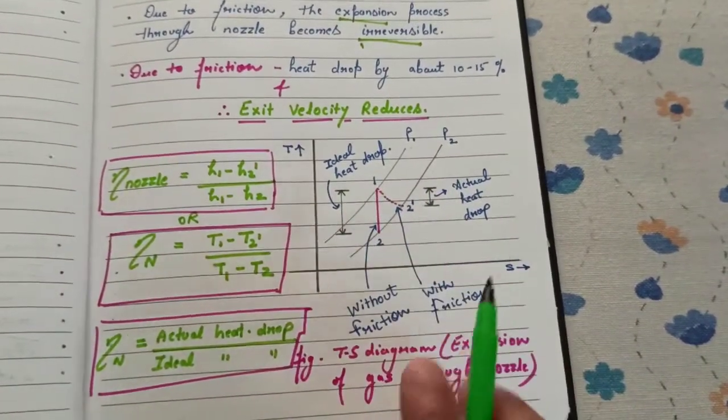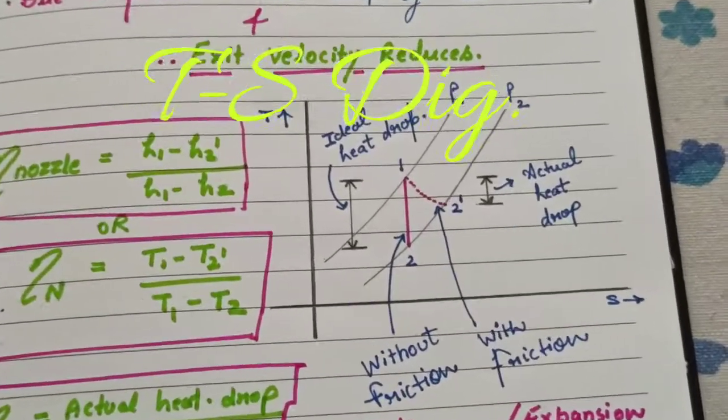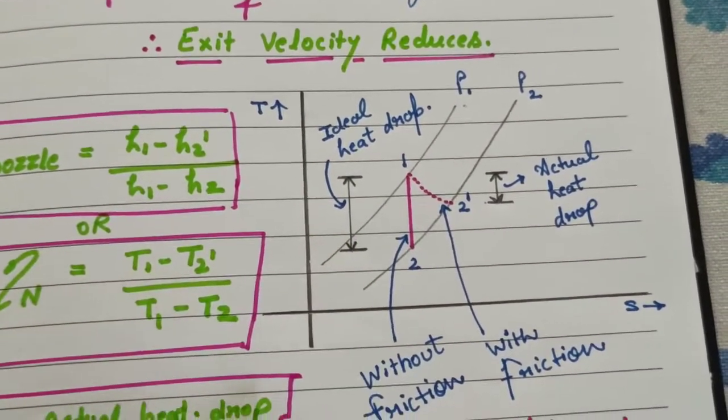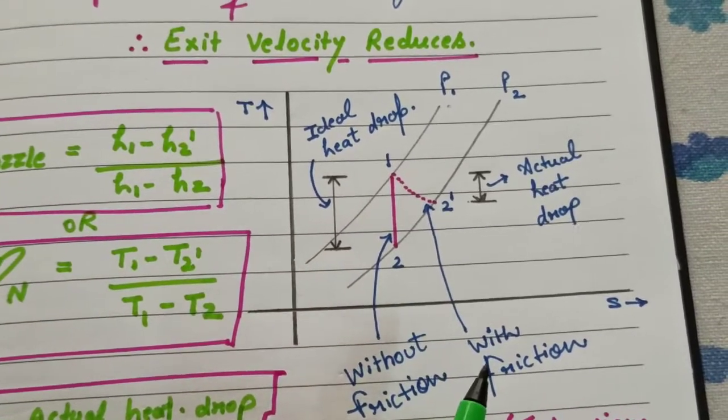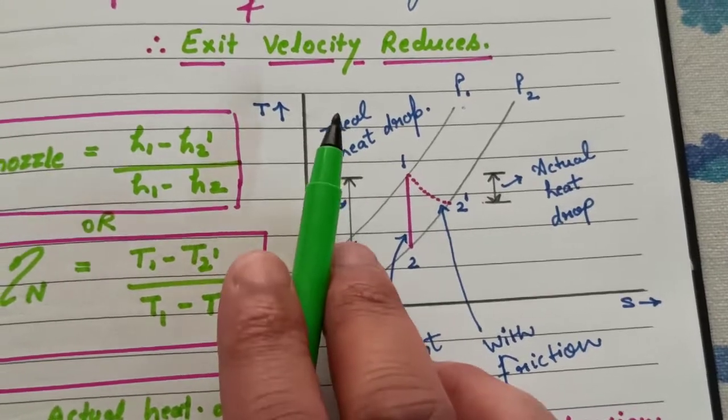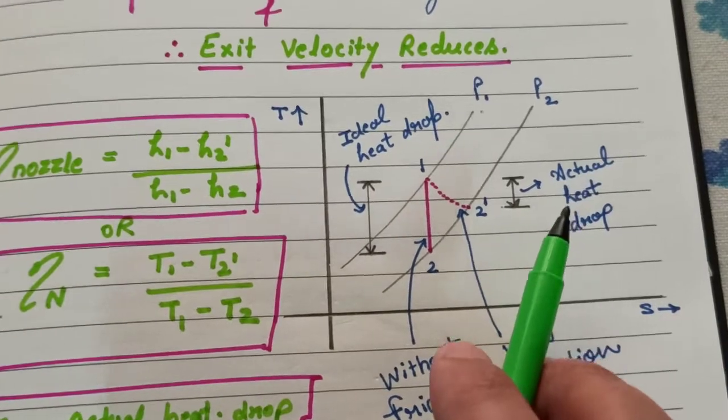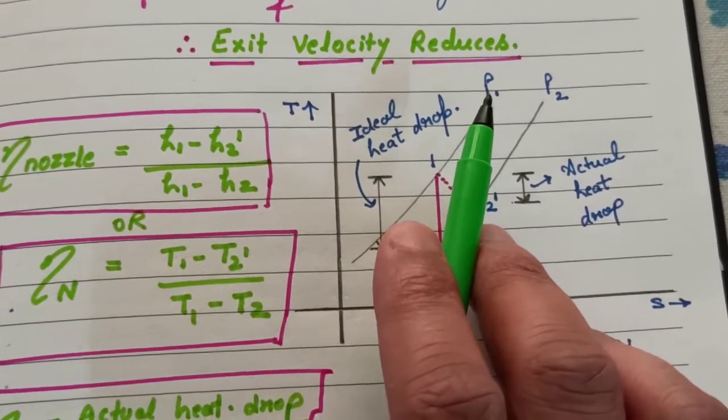In this figure, 1 to 2 shows you without friction and 1 to 2 dash shows you with friction. Now, 1 to 2 gives you ideal heat drop and 1 to 2 dash gives you actual heat drop. These lines here represent the P1 and P2 pressure lines in the TS chart.